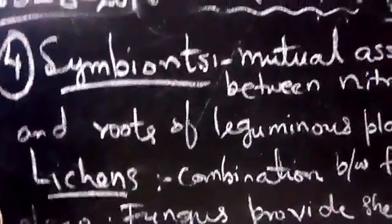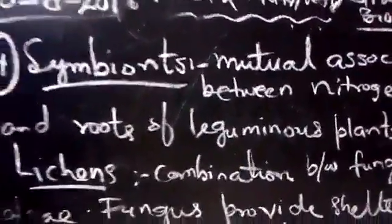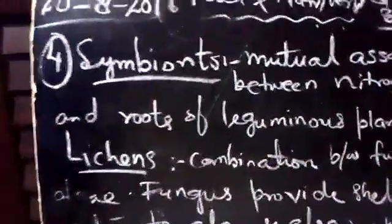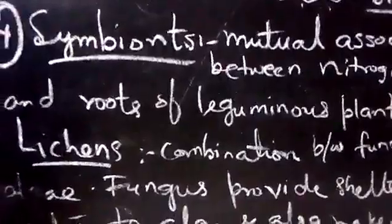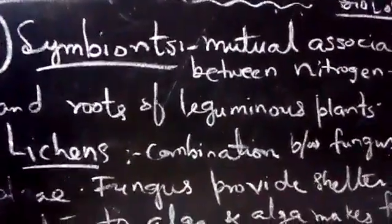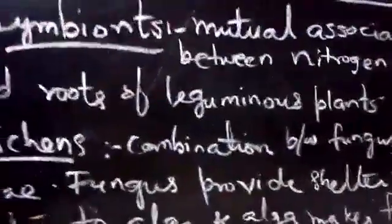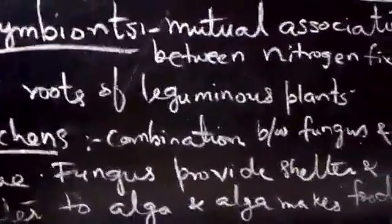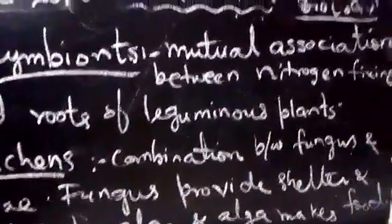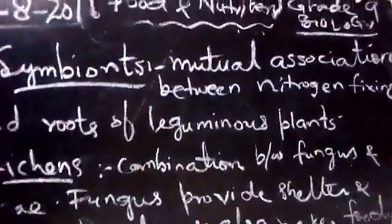Plants absorb different types of nutrients from the earth — calcium, manganese, magnesium, and nitrogen compounds. In the same way, plants also need nitrogen. Do you know how much nitrogen is in the atmosphere? About 78% — most of the air is nitrogen.